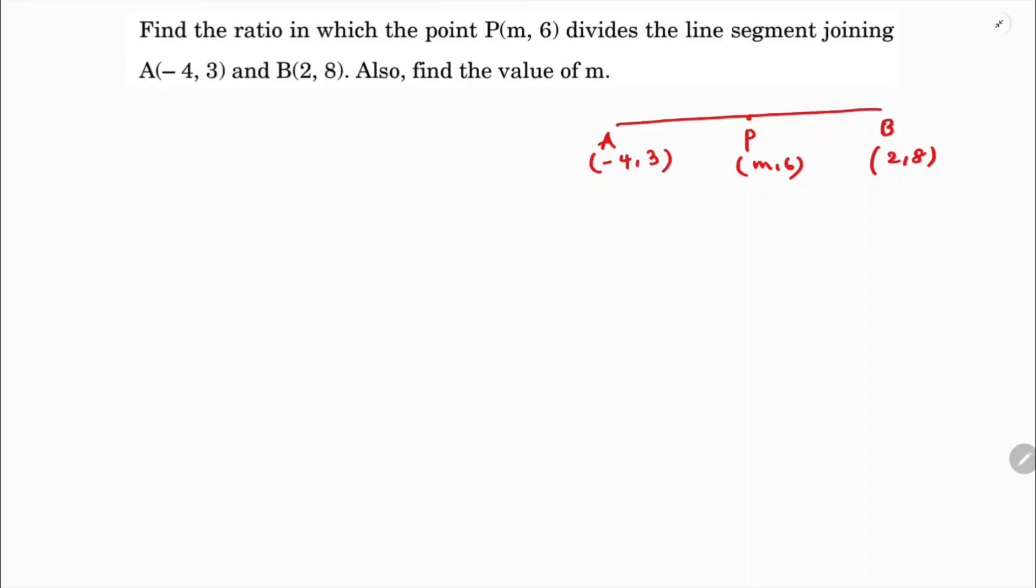So find the ratio. You can take ratio as M1:M2 or K:1. I will take M1:M2. So now here point P, I will use section formula.